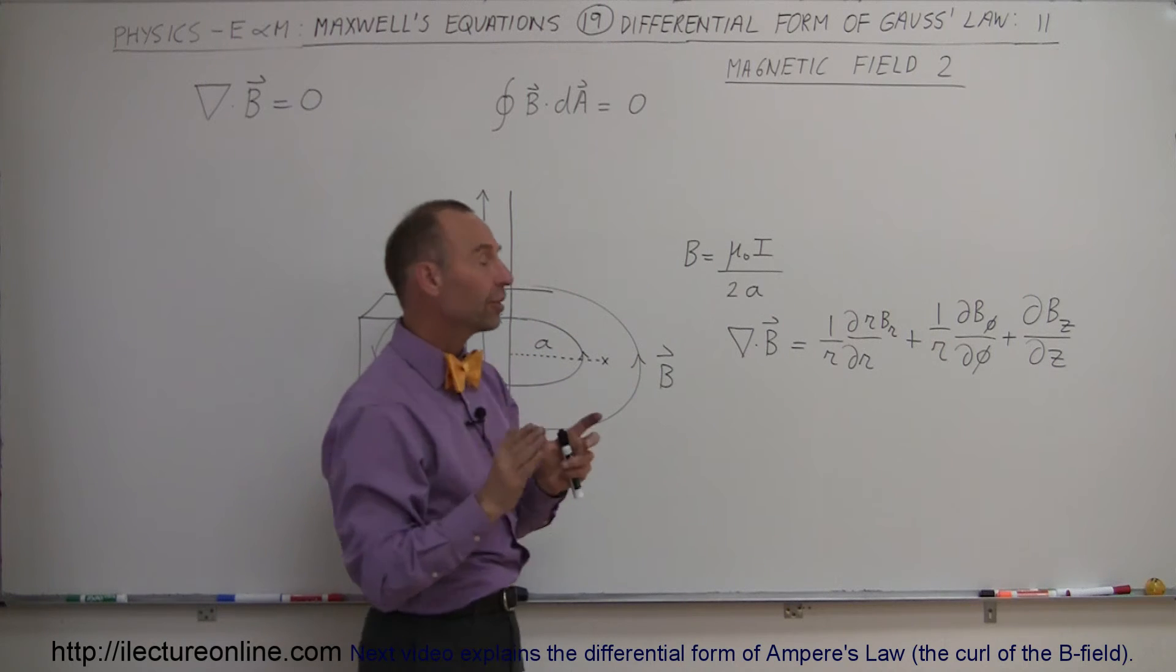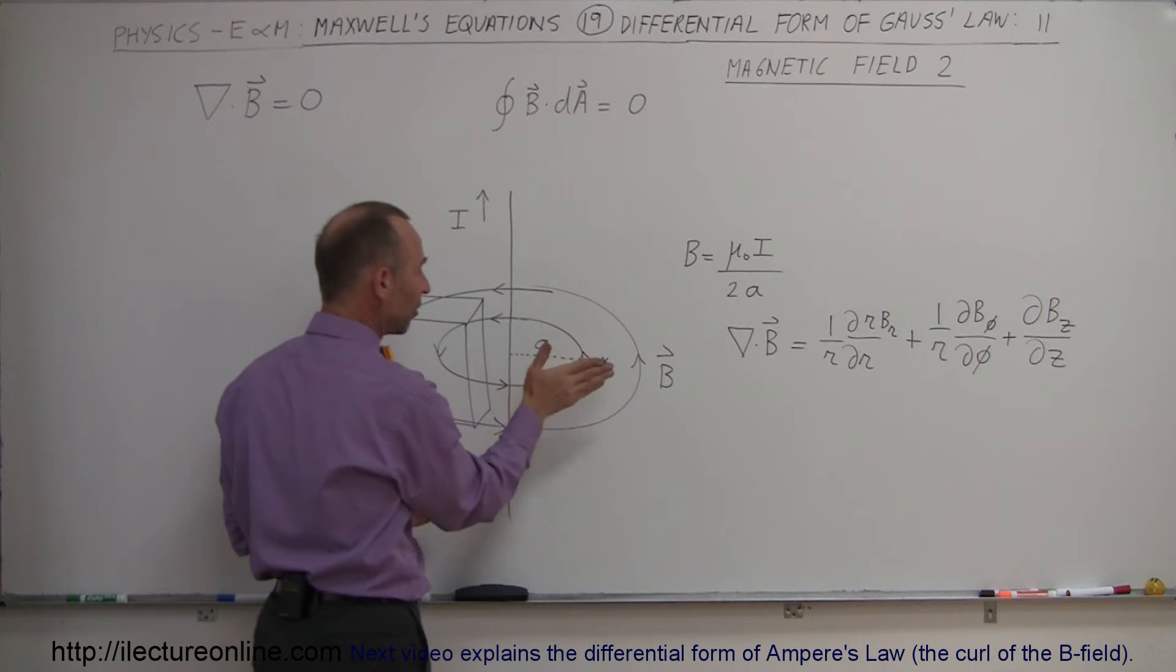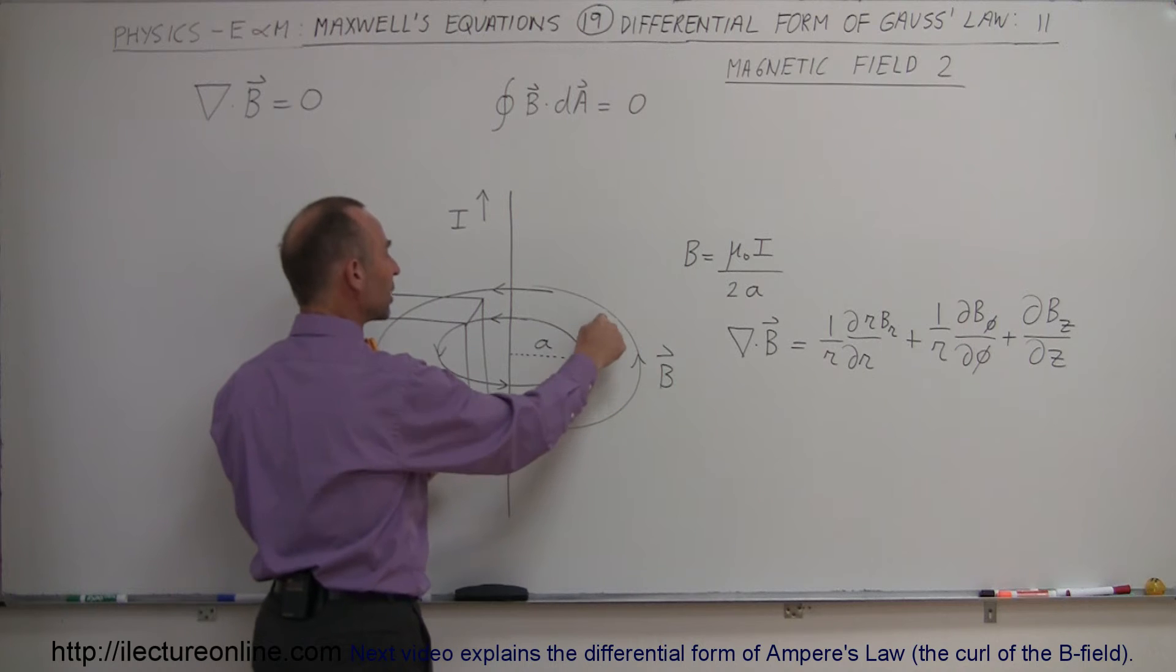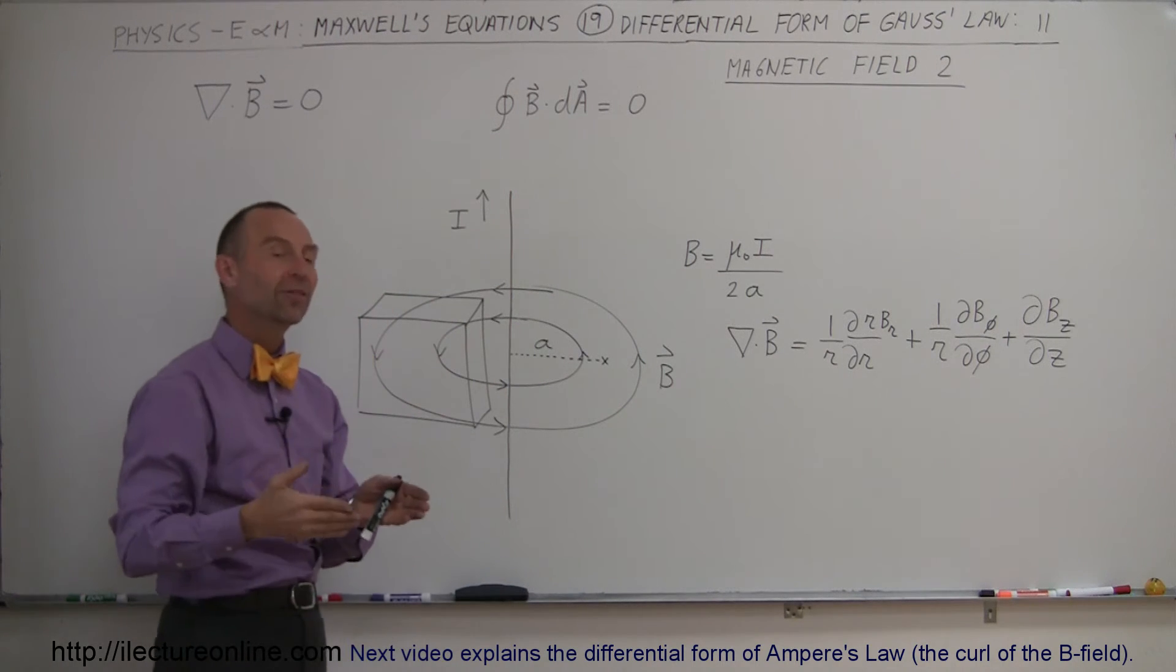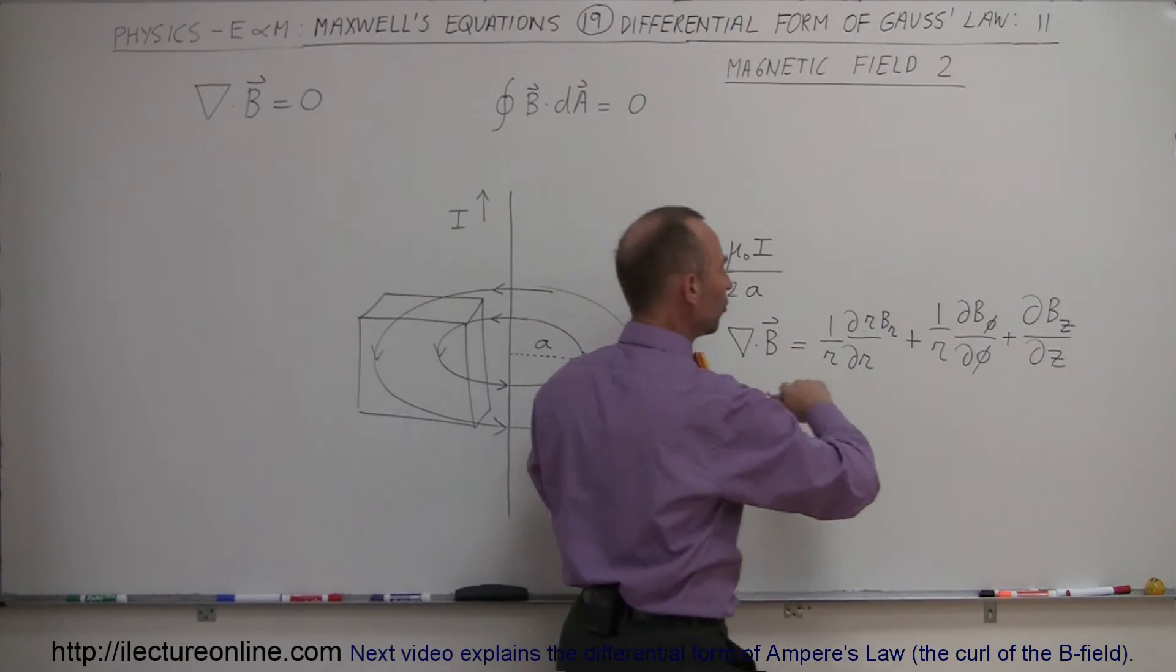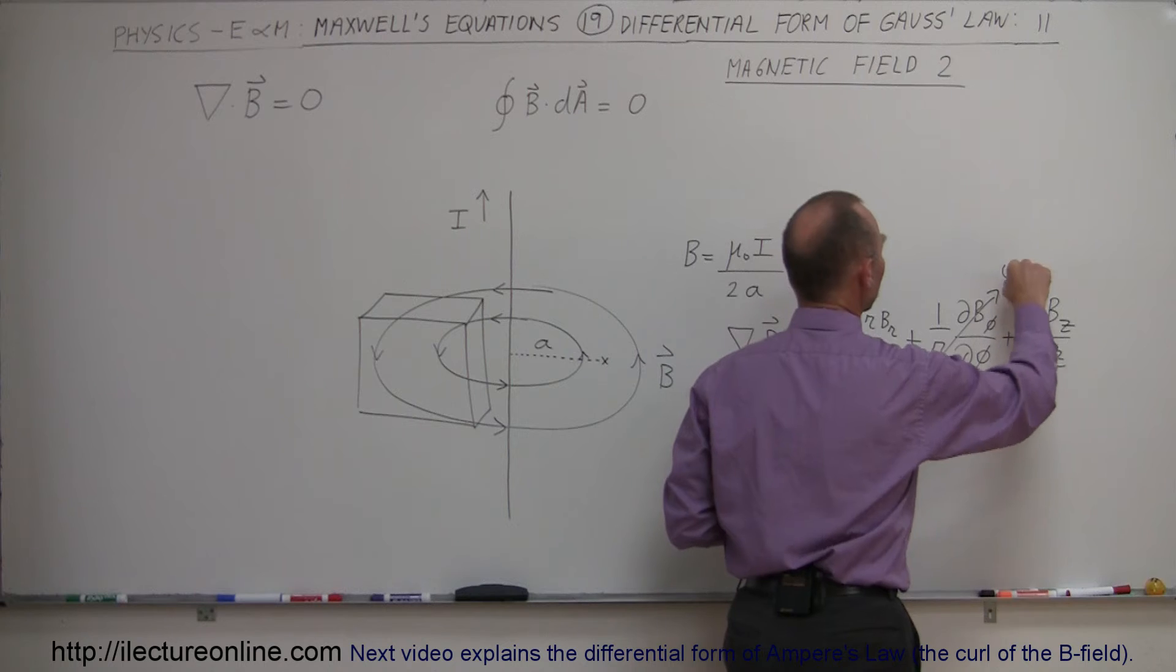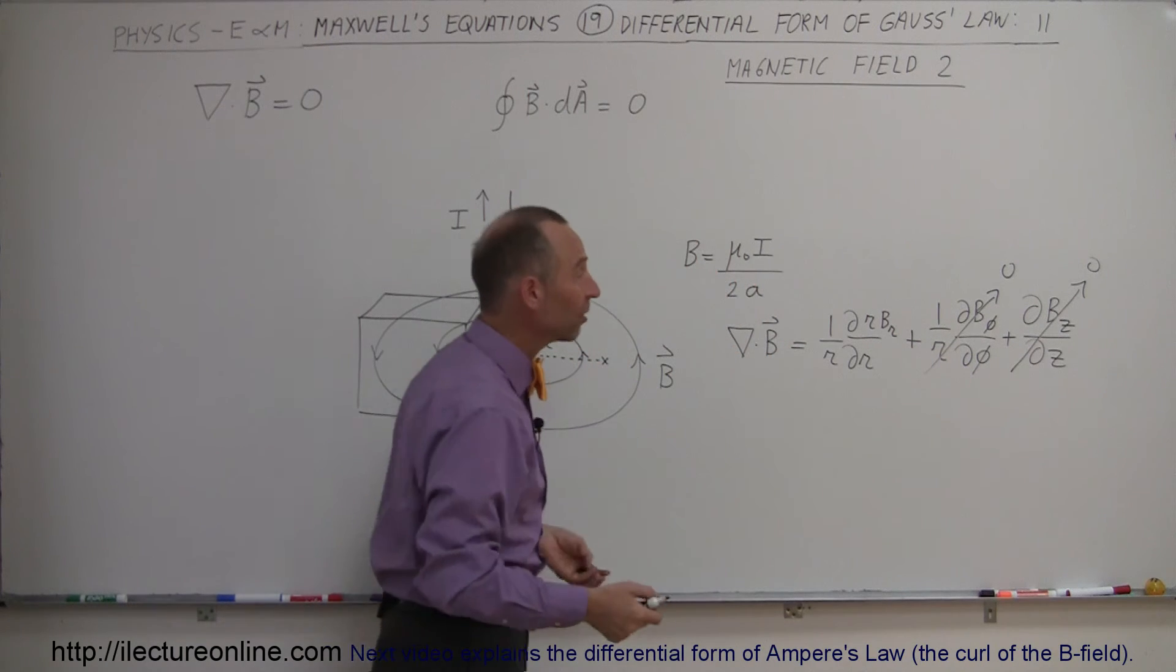Now notice that there's no variation in angle so no matter in which direction you face the B field will always be the same. The only thing that matters is the distance from the wire. It doesn't matter if you're over here, here, or here, or down here. As long as the wire is long enough there's no dependency on the z direction, there's no dependency on angle, so those last two portions of the equation become equal to zero because you take the derivative of that, since they're constant you get zero.